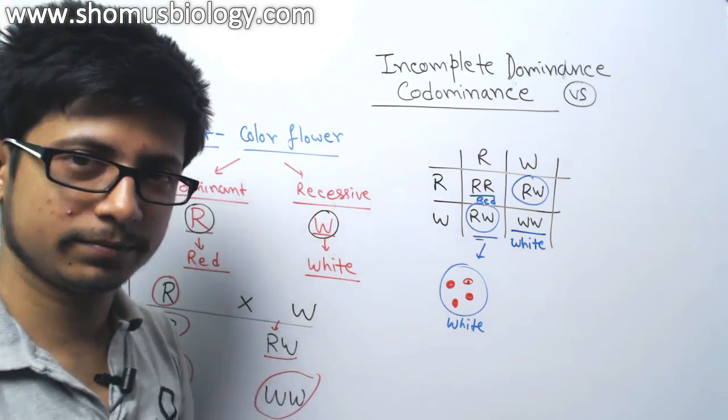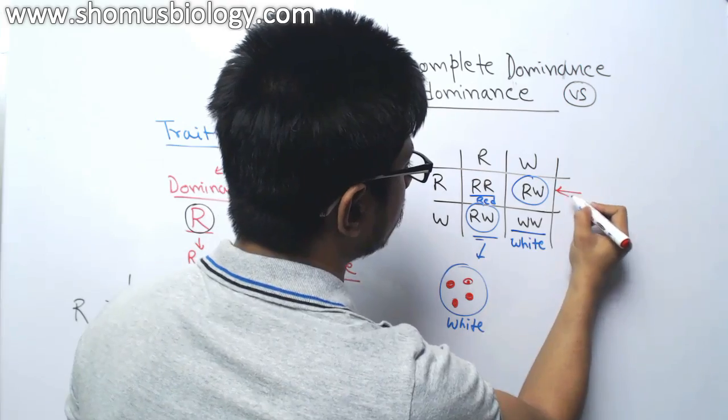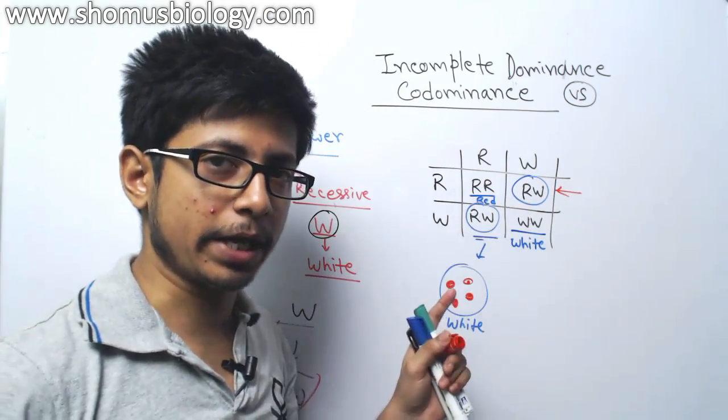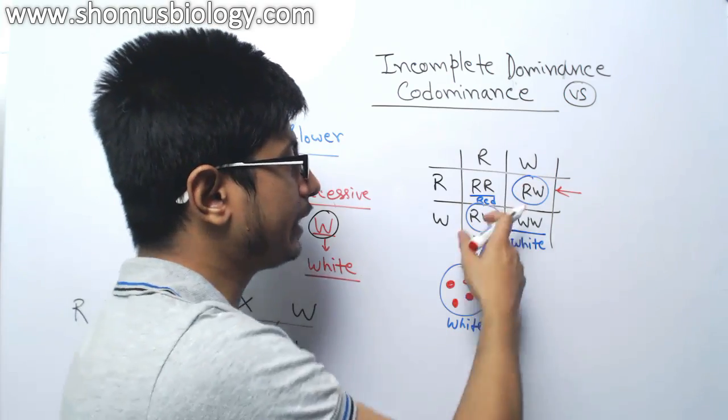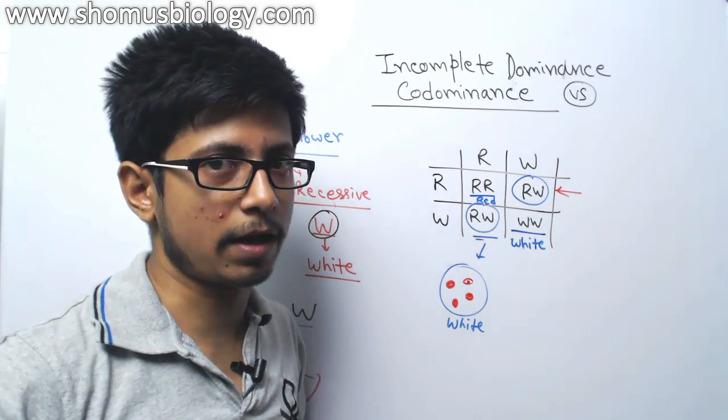They are, we have a white flower with red dot. So what does that mean? So this is the third phenotype we get, completely new phenotype. Parents are either red or white in the flower, but here we get a flower, white flower where red spots are there in the flower.